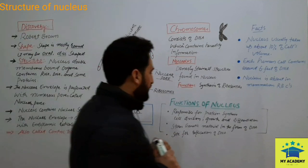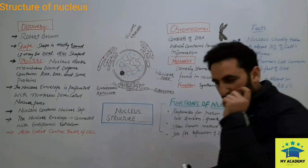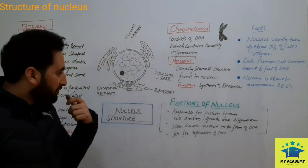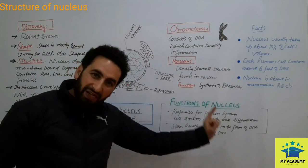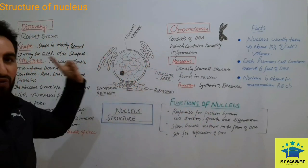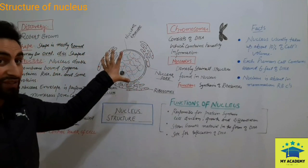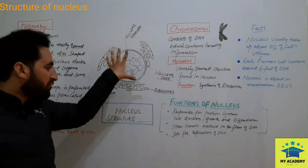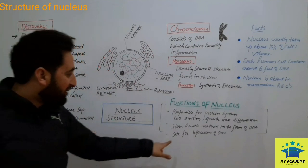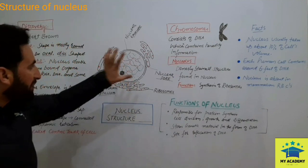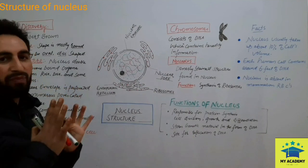Now let's see the functions of the nucleus. First, it is responsible for protein synthesis, cell division, and cell growth and differentiation — it controls all these activities. Second, it stores genetic material in the form of DNA, RNA, and nucleic acids. Third, it is the site for DNA replication, where an exact replica — a true copy — of the DNA is produced.